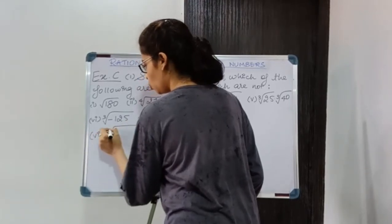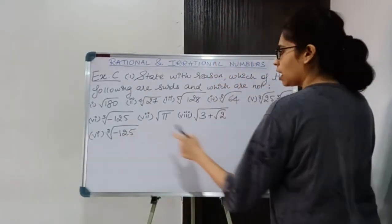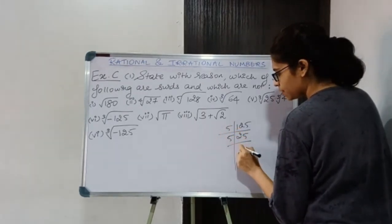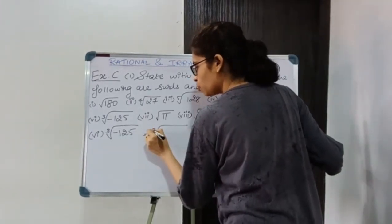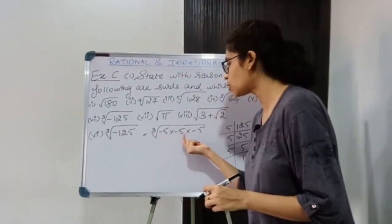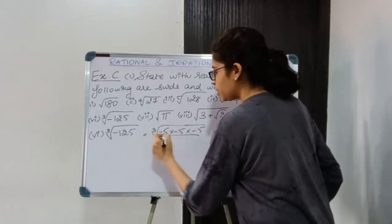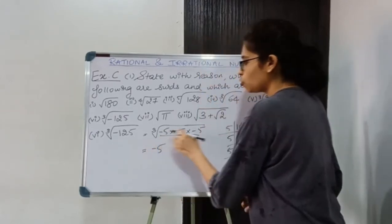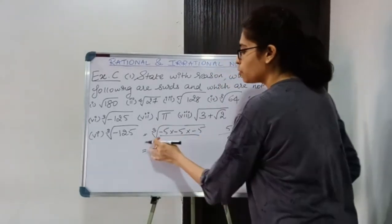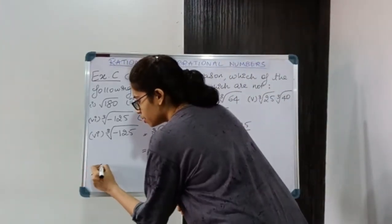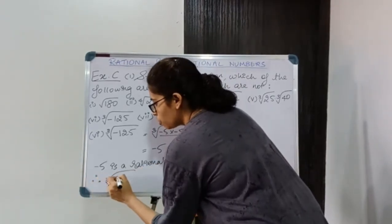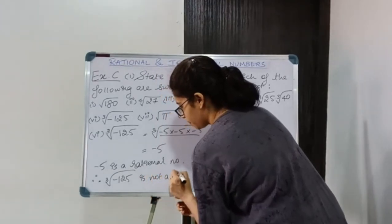The sixth number is ∛(-125). Since I have a negative number, I factorize 125 as 5 × 5 × 5, so it becomes ∛((-5) × (-5) × (-5)). Making a group of 3, the cube root gives -5. Since -5 is a rational number, the root of a rational number is giving a rational answer. Therefore, ∛(-125) is not a surd.